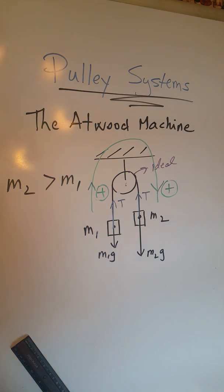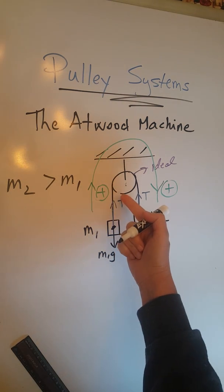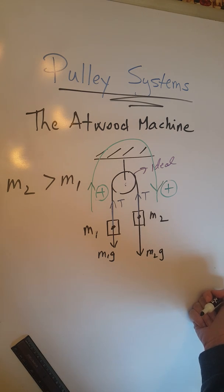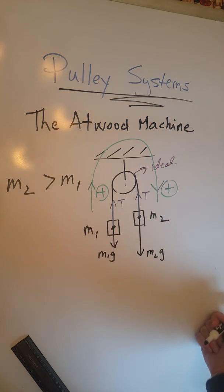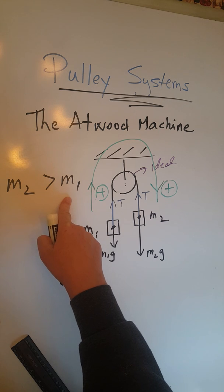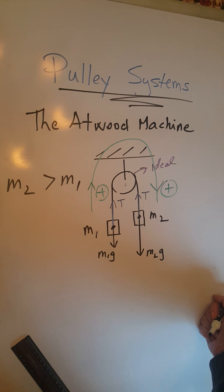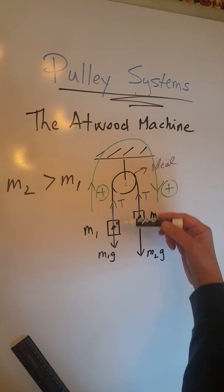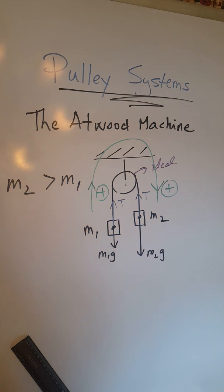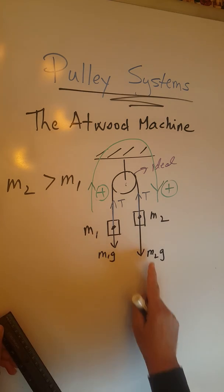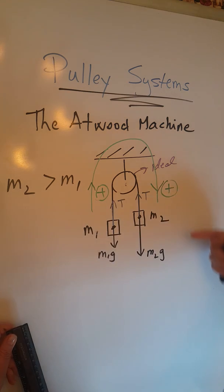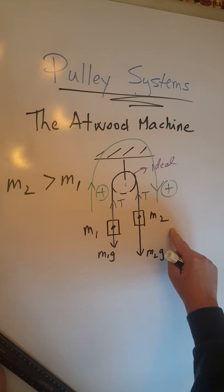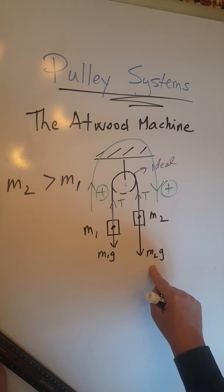We now have m1g downward and T upward for m1, and m2g downward and T upward for m2. Let's do a magnitude check. We know the system accelerates because m2 is greater than m1, so the forces must be unbalanced. For m2, m2g must be greater than T since m2 accelerates downward. Checking: m2g measures 8 centimeters and T measures 5 centimeters — 8 is greater than 5, so the magnitude check is satisfied, showing an unbalance in favor of m2g.